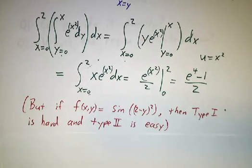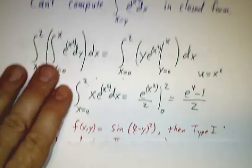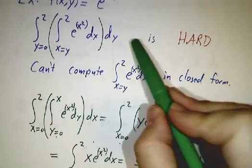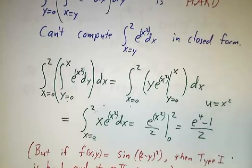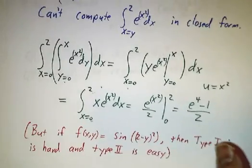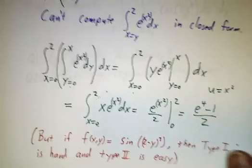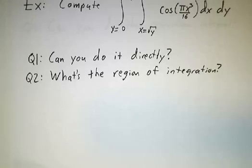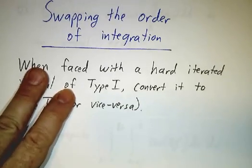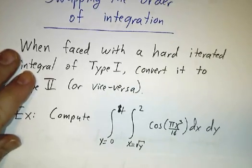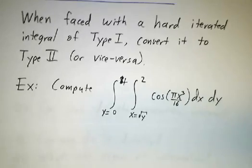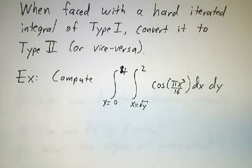Now if we'd been trying to integrate a different function, like f(x, y) equals sine of 2 minus y squared, then the roles would be reversed — one way would be very hard and the other easy. Which one is easier depends on the function you're integrating, so you need to learn both Type 1 and Type 2. In fact, there are times when you're given one and want to convert to the other — this is called swapping the order of integration.